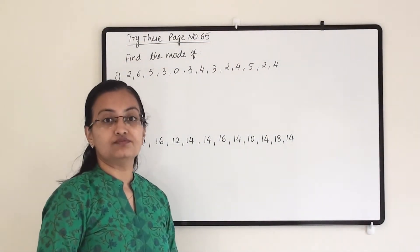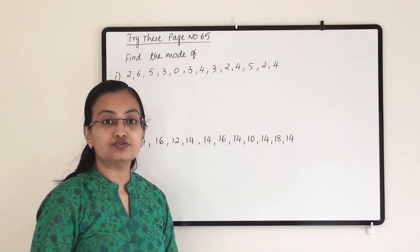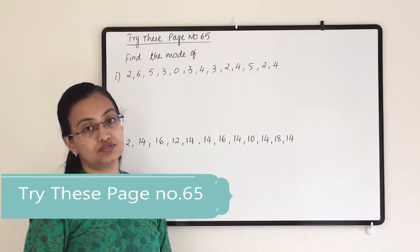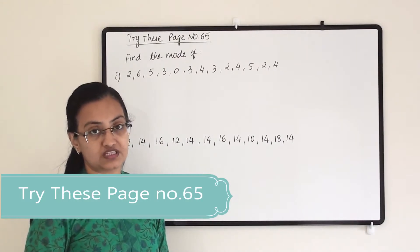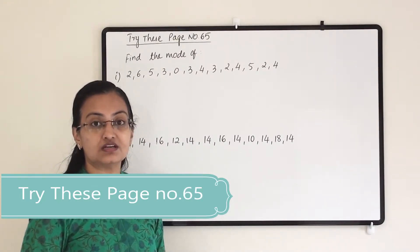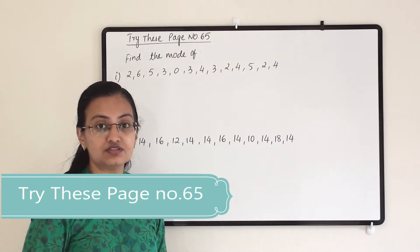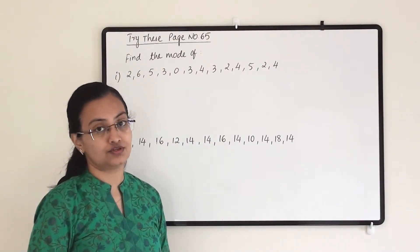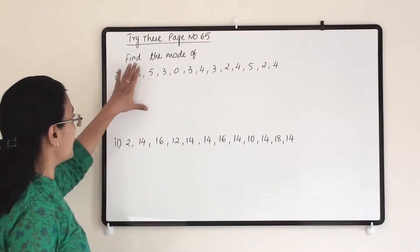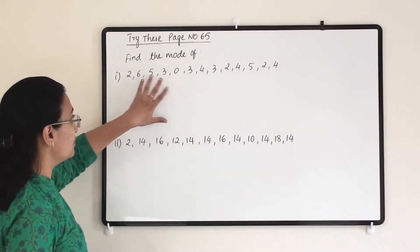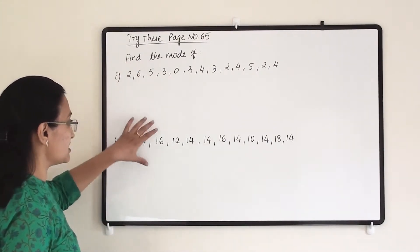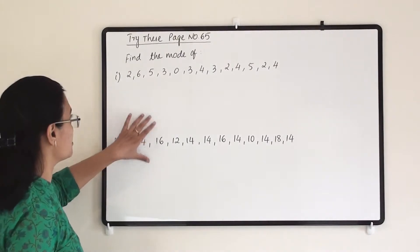Welcome to Learn Yourself. Today we are going to solve try these sums from page number 65. This is under CBSE standard 7 syllabus from the third chapter. We have to find out the mode for these observations.